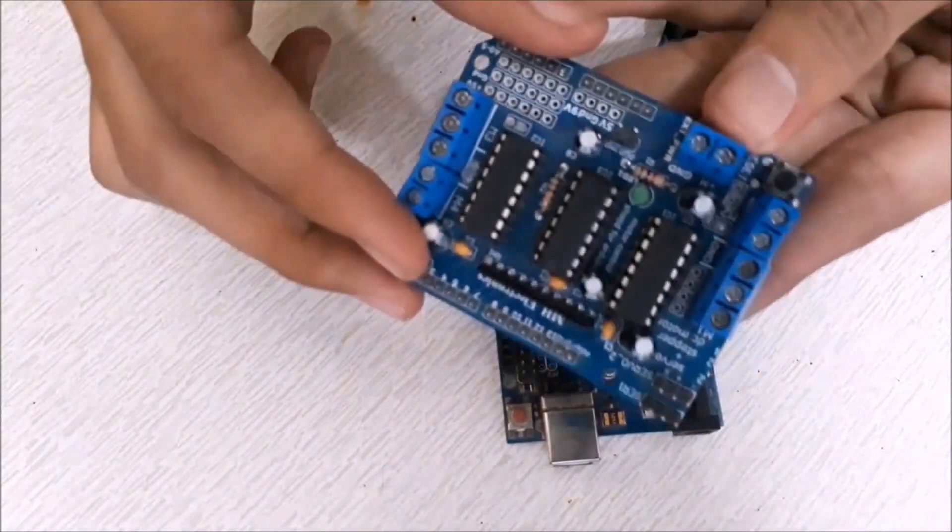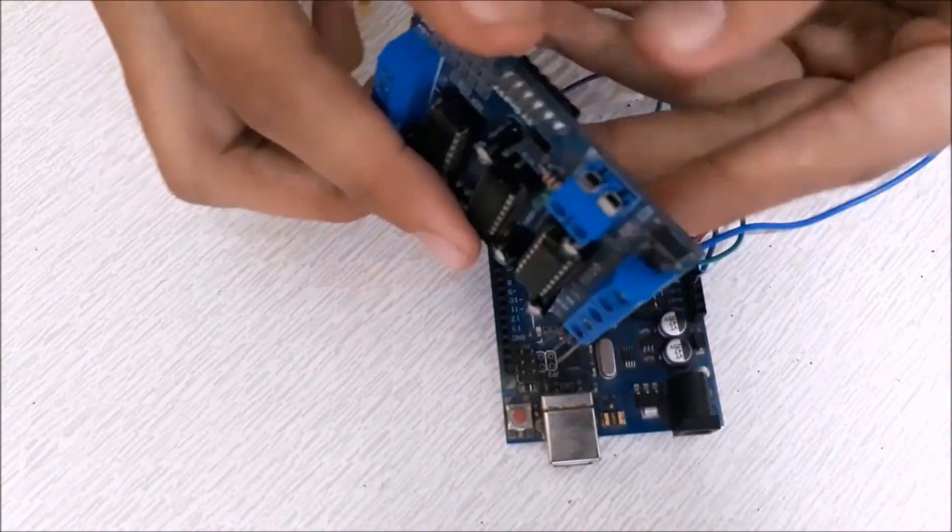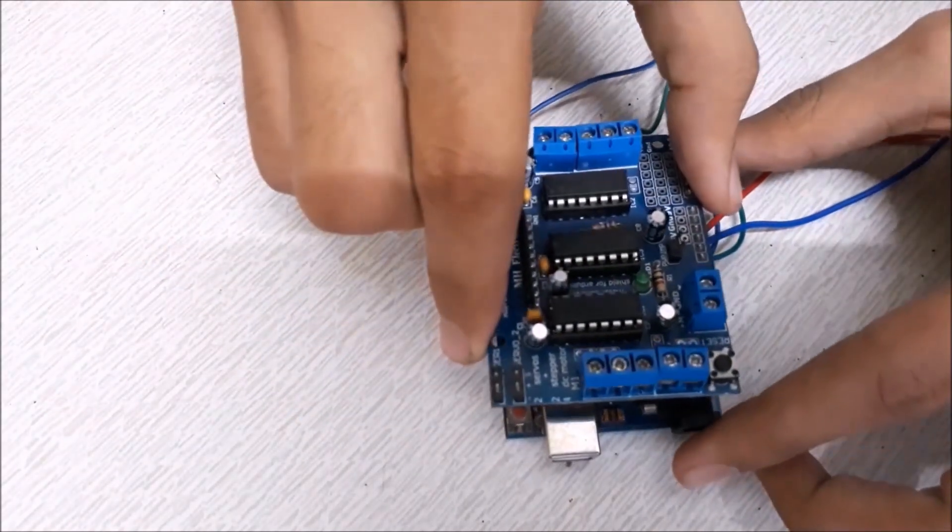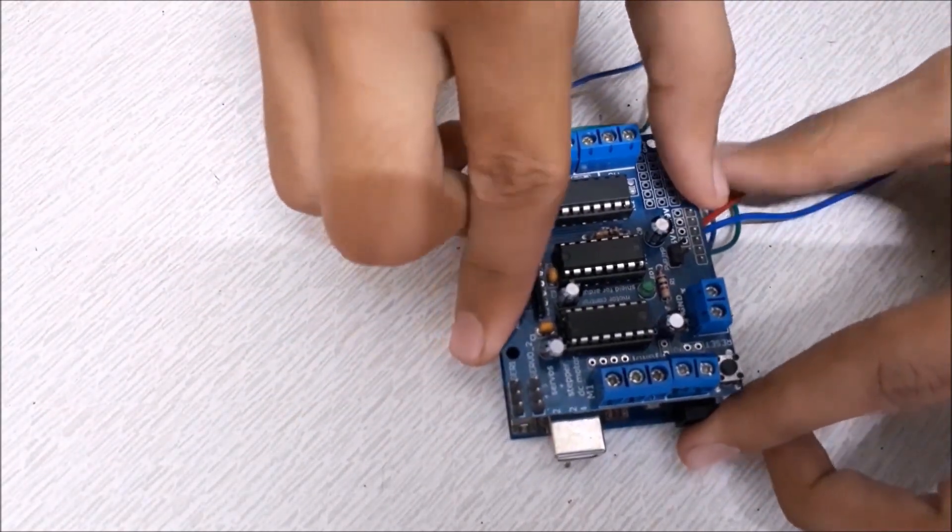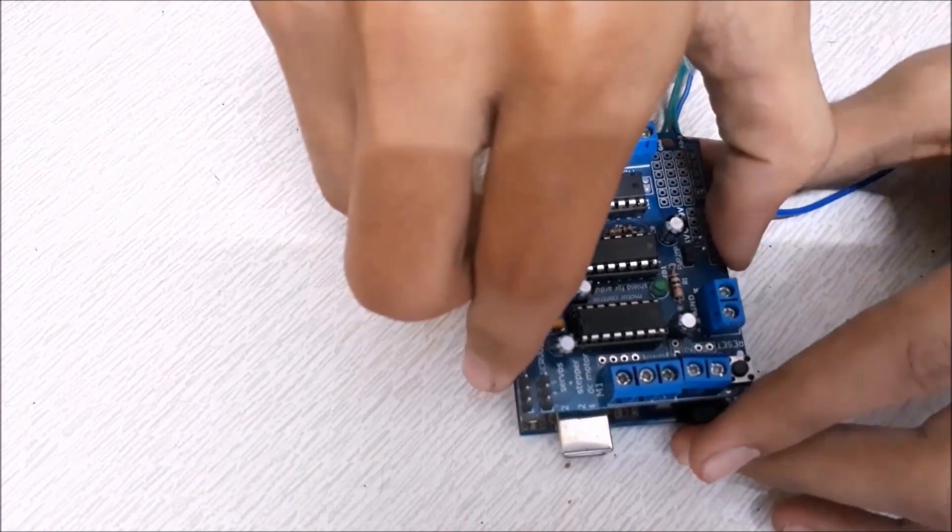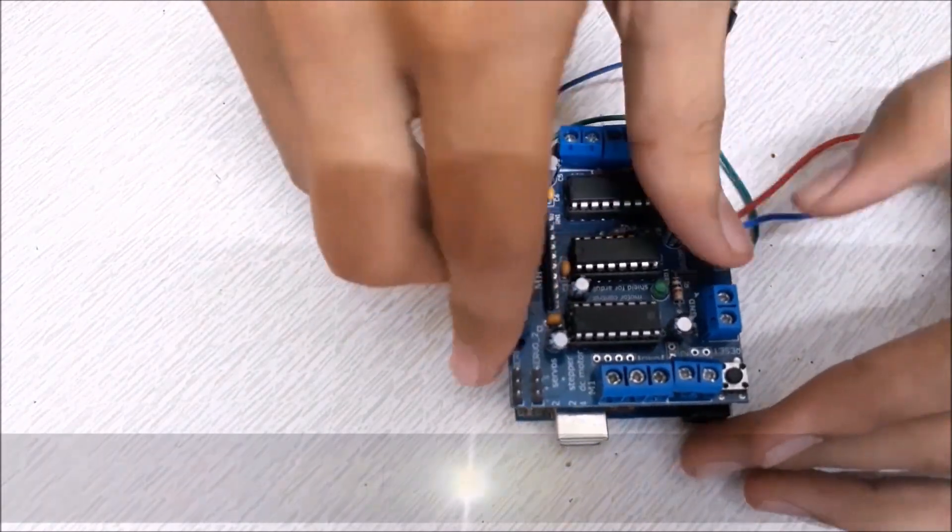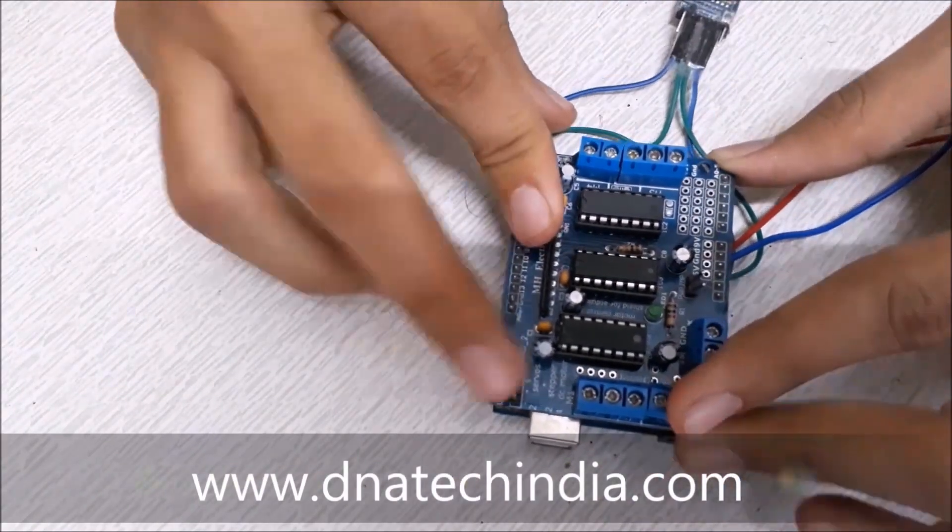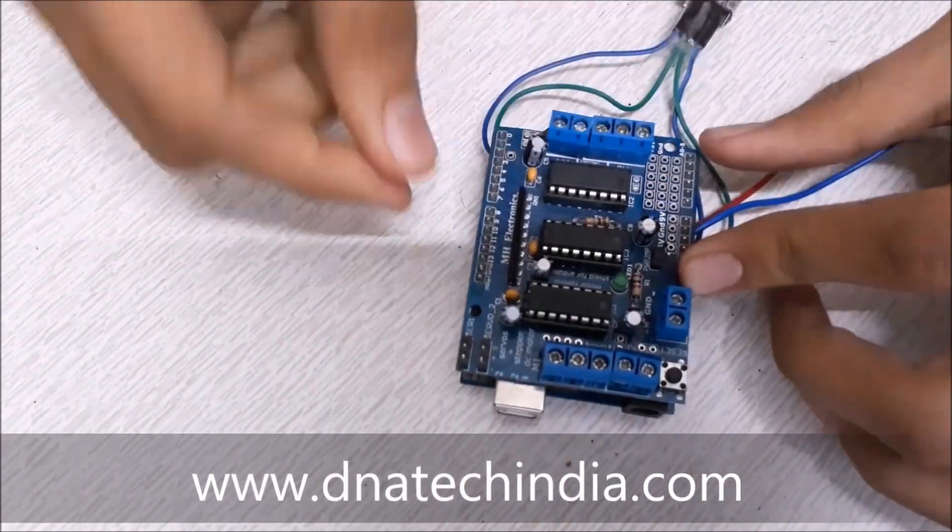Now take the L293D motor driver shield and stack it onto the Arduino. While doing this be careful that you don't damage any wires below connected to the HC05 module. To get some good quality electronic components at a good price you can head over to www.dnatechindia.com.